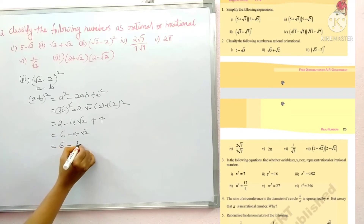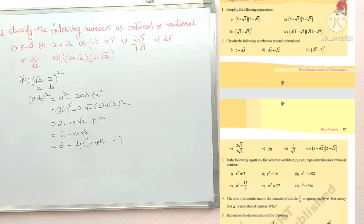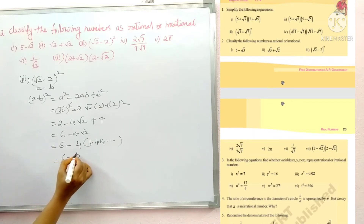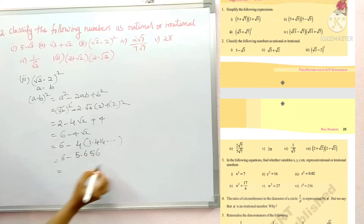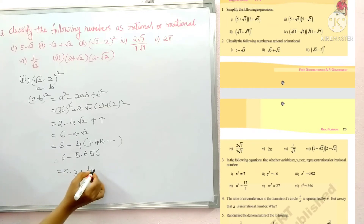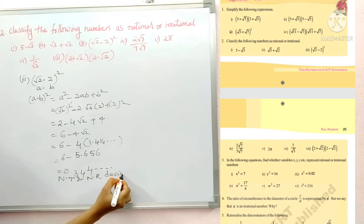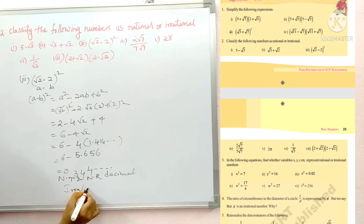To verify: root 2 equals 1.414, so 4 times 1.414 equals 5.656. Then 6 minus 5.656 gives 0.344 and so on. This is non-terminating and non-recurring, so this is an irrational number.